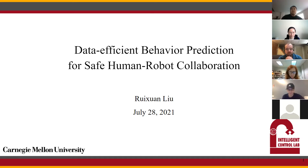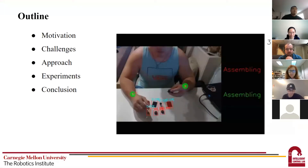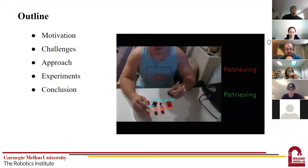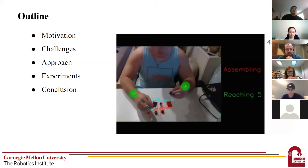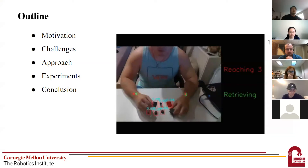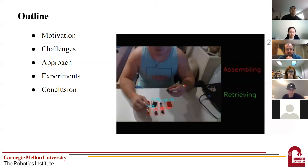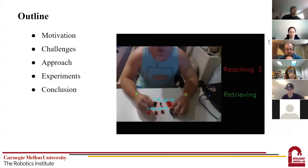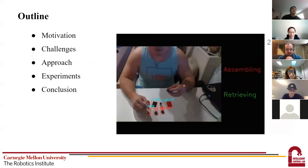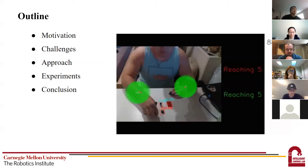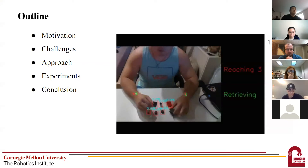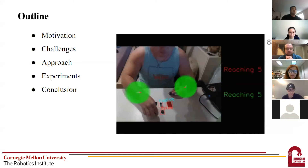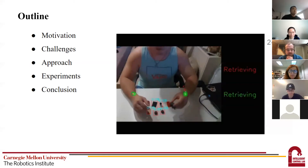This is the outline of the presentation. I will first briefly discuss the motivation and challenges of this work, then spend some time on the methods developed, and talk about the experiments and results. I will also conclude with some potential future works. On the right is a visualization of the final behavior prediction, from which we can infer the detailed future skeleton trajectory as well as the semantic understanding of human intention.